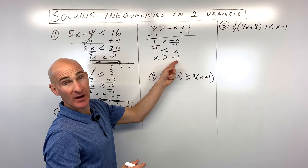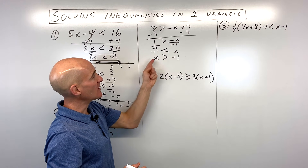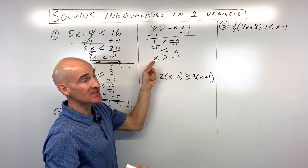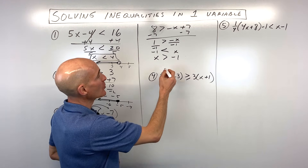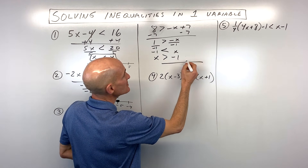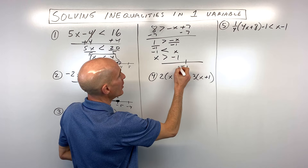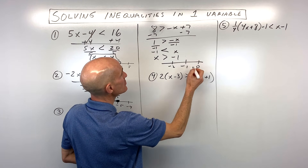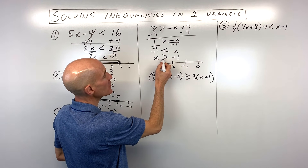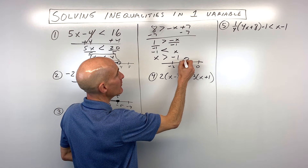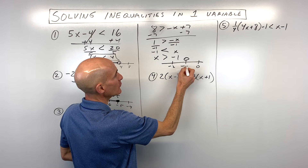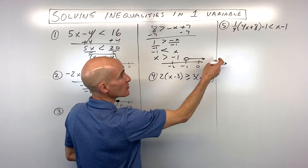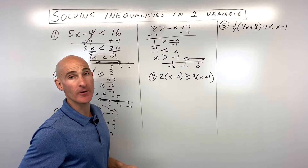If you read this from right to left, it's like negative 1 is less than x. Now we can go ahead and graph it. Here's negative 1, here's negative 2, here's 0. We want all the values that are greater than but not including negative 1, so we go to the right — all the values that are greater.